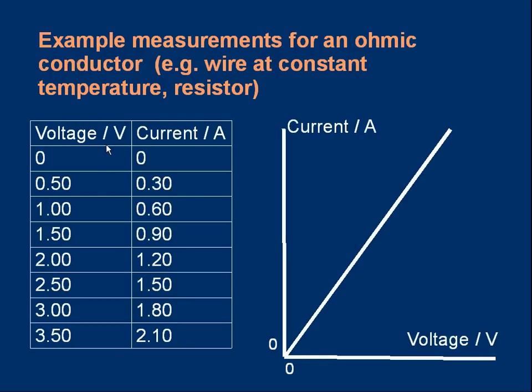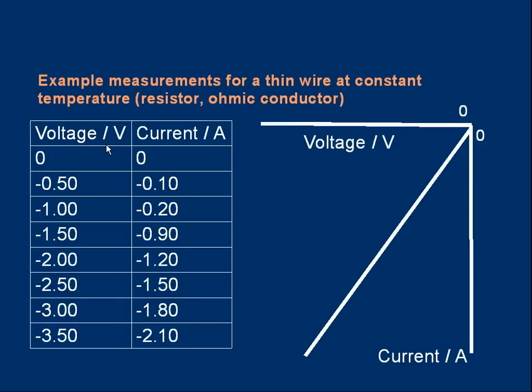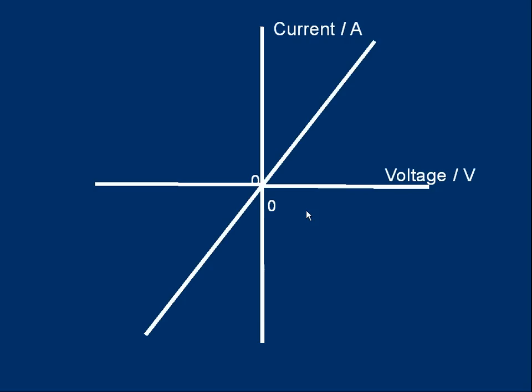I could reverse the polarity and do the results again - same results, negative values. The graph would look like this. I could combine my positive and negative results. This is the full characteristic of a resistor. I can read off what the current will be for any voltage.